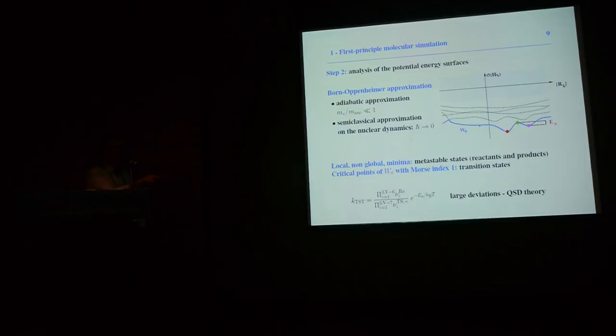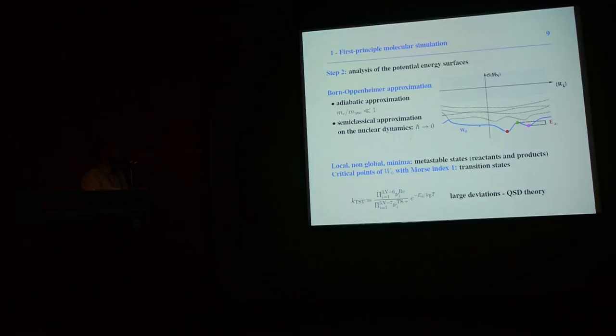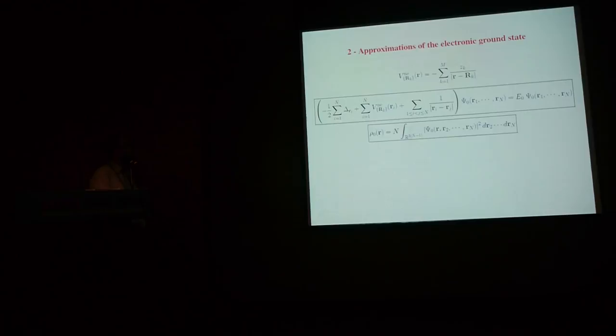Once we know the reactants, the products, and the transition states, we can use transition state theory to estimate at least the reaction rate, given by an Arrhenius-type formula. Here, E_a is the activation energy — the difference between the energy of the transition state and the energy of the reactants. K_B is the Boltzmann constant, T is the temperature, and the ν_i are the vibration frequencies of the reactants and transition state.